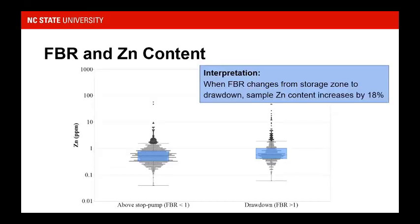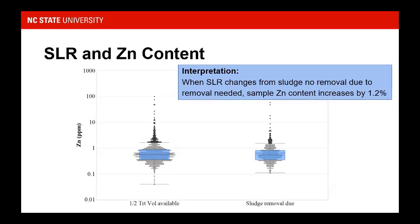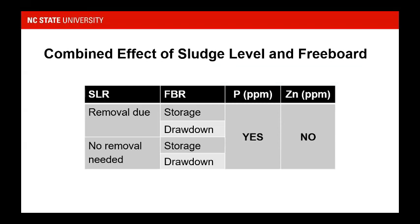Similar trends appear for zinc. When in drawdown, we see about an 18% increase in zinc concentrations, with more outliers and spread occurring during drawdown. When sludge removal is due, we're seeing about a 1.2% increase. This tells us that freeboard has a much greater impact on supernatant phosphorus and zinc than sludge level alone. When we examined the coupled effects across all four conditions for phosphorus and zinc, we saw statistically significant differences for phosphorus but not for zinc — which was interesting to note. For phosphorus, the difference was still pretty small.